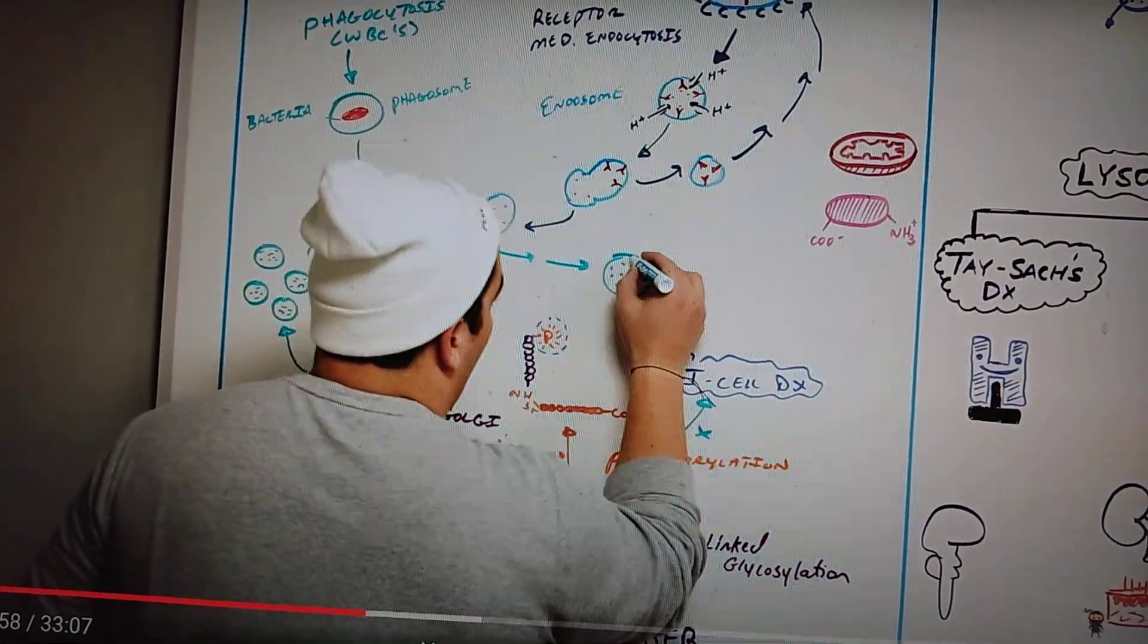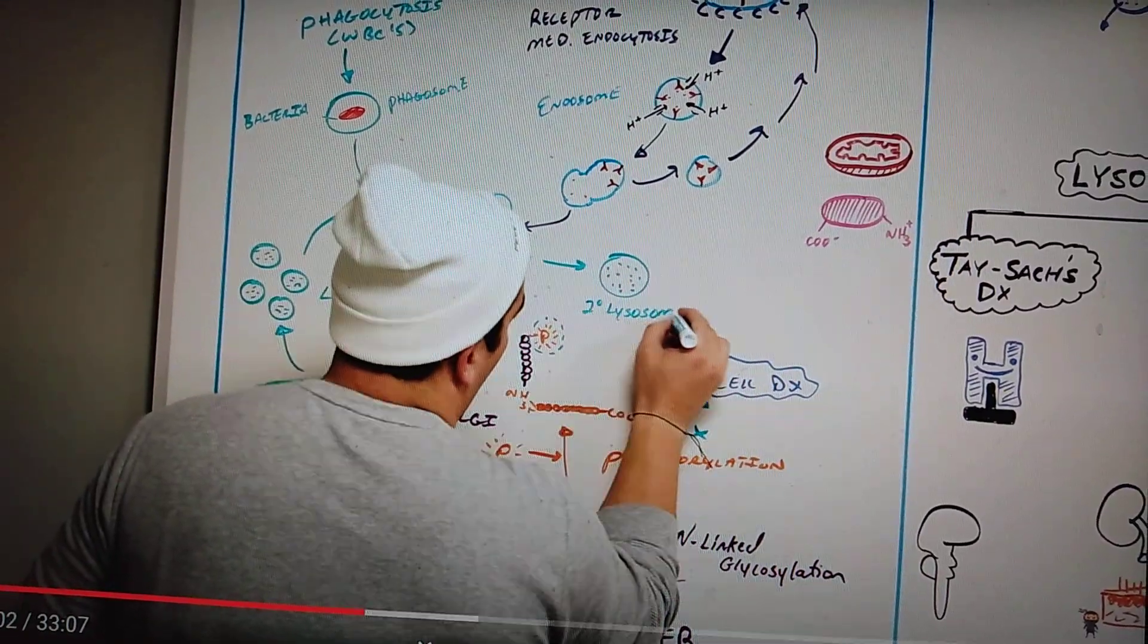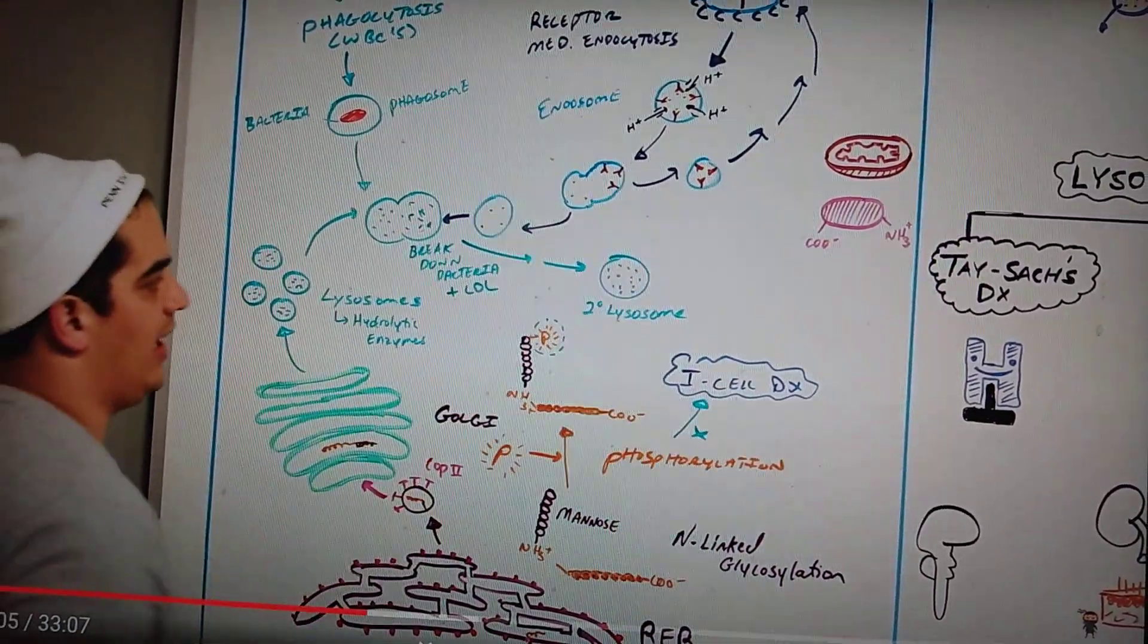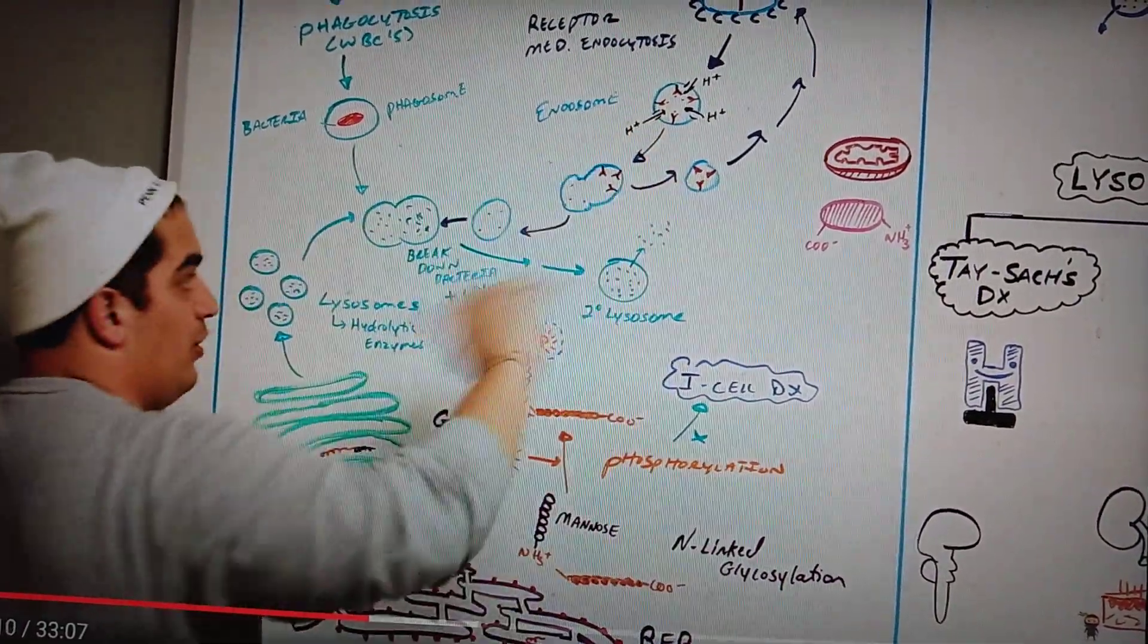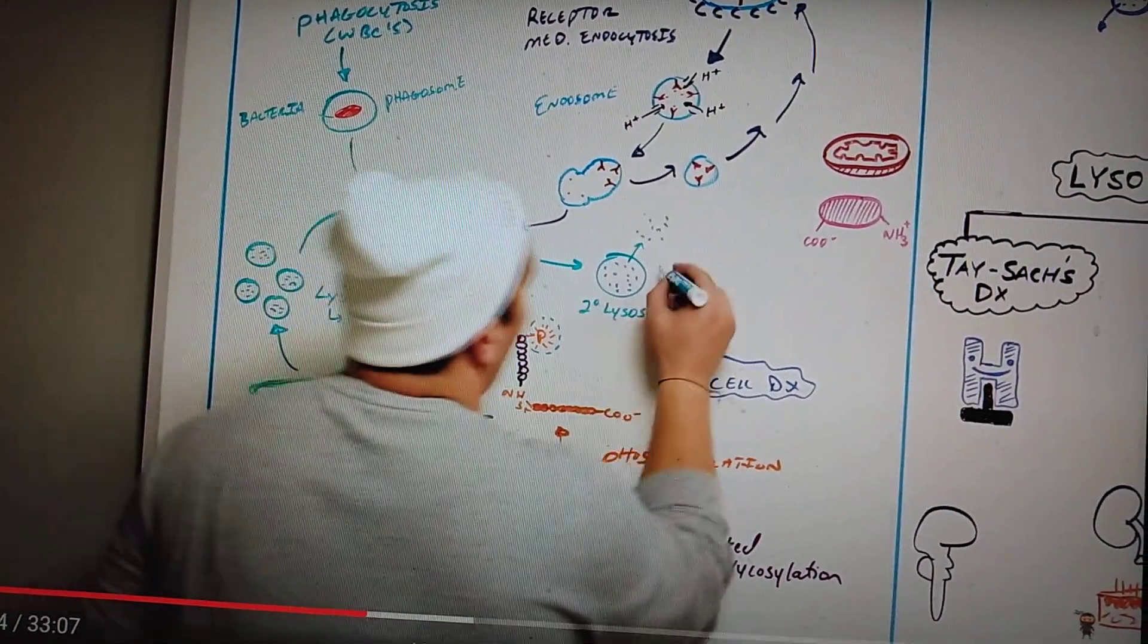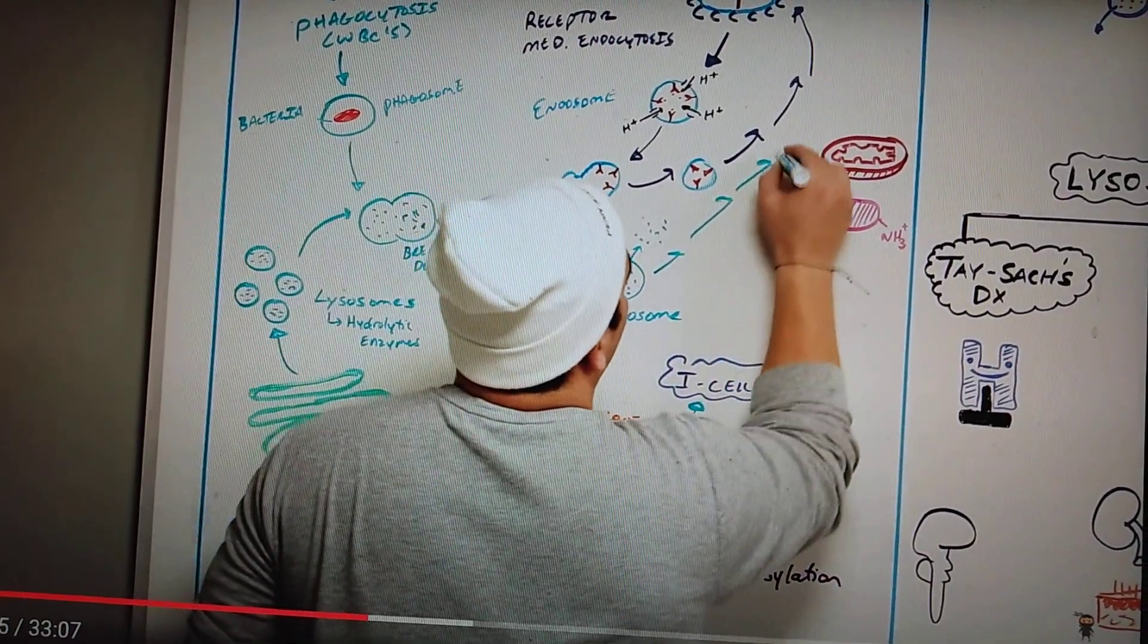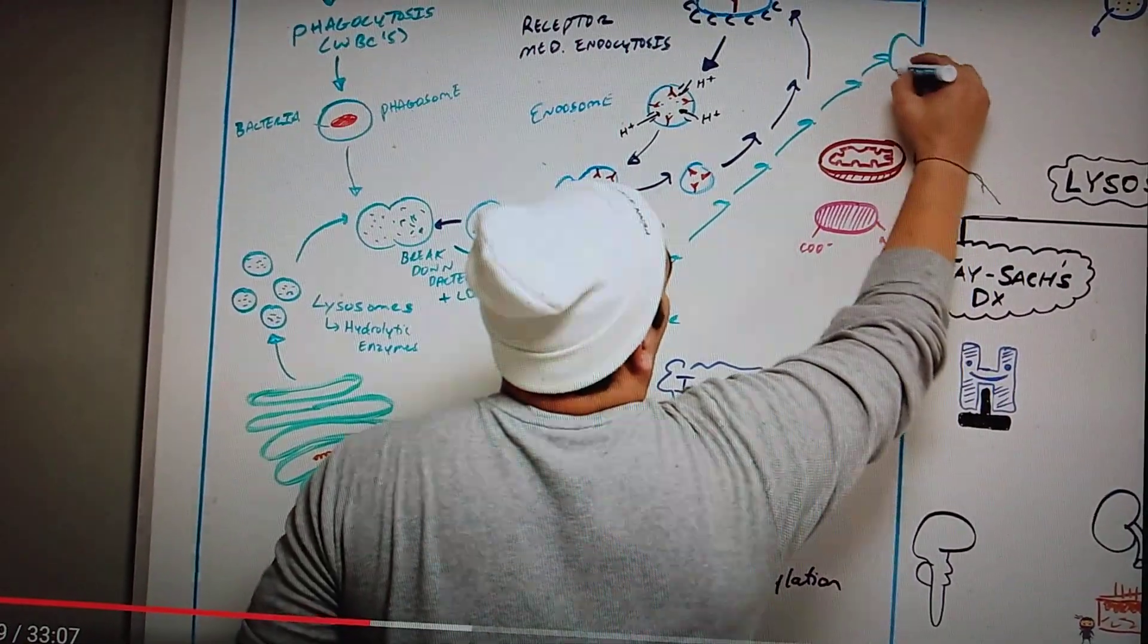So let's say it's performed its function, it's broken down all these macromolecules and bacteria. Once it's done that it's called a secondary lysosome. There's two things that can happen with this secondary lysosome. It can spit some of these molecules out into the cytosol that maybe can be used for certain metabolic pathways, or you know what else it can do? It can go to the cell membrane, bind with the cell membrane and release some of these molecules out of the cell via a process called exocytosis.